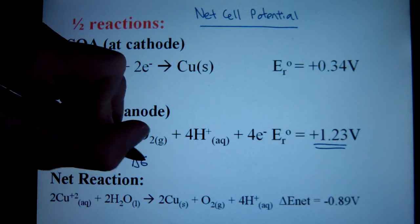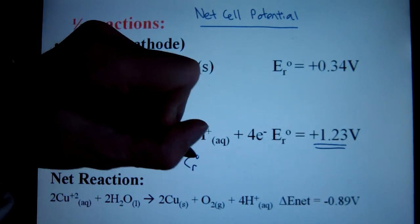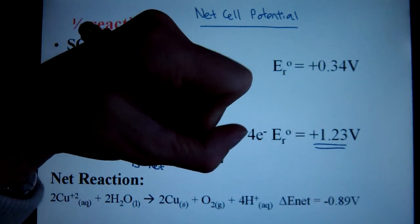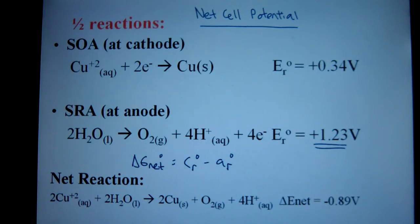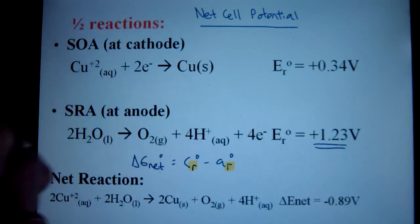In order to calculate delta E net, we simply subtract the reduction potential of the cathode minus the reduction potential of the anode. Notice, please, that it's reduction potential of both cathode and anode.